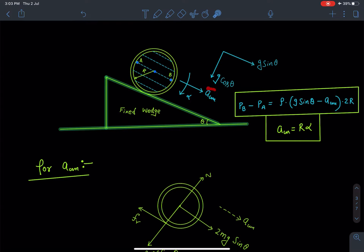And also this a and α are related to each other as a_CM is equal to Rα as there is no slipping. So somehow we have to find this a_CM in order to get the answer for this question.